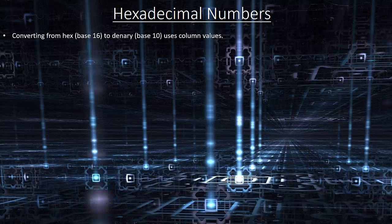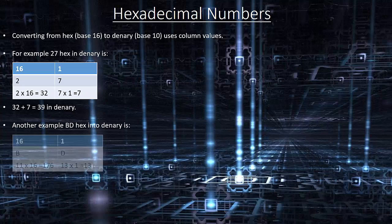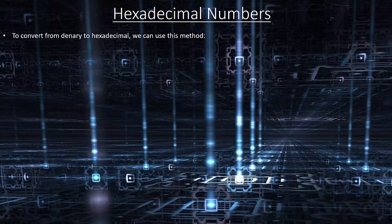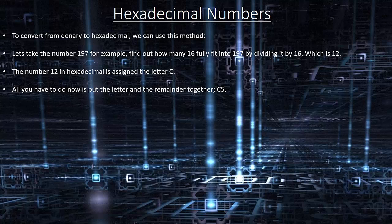Converting from hex to denary uses column values. For example, 27 in hex: 2 times 16 plus 7 equals 32 plus 7 equals 39 in denary. Another example is BD in hex: B equals 11, so 11 times 16 plus 13 equals 176 plus 13 equals 189 in denary. To convert from denary to hexadecimal, take the number 197 for example. Find out how many 16s fully fit into 197 by dividing by 16, which gives 12 remainder 5. The number 12 in hexadecimal is assigned to the letter C. Put the letter and the remainder together to get C5. So 197 in denary is C5 in hexadecimal.